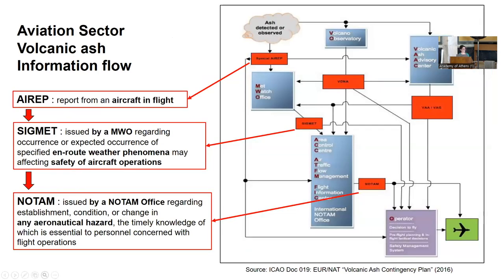This diagram shows the information flow within the aviation sector in case of a volcanic eruption, as prescribed by ICAO in the Volcanic Ash Contingency Plan. Information is exchanged and disseminated between different parties in the form of messages — either in digital gridded format or alphanumeric form. The role of the VACs is obviously crucial in receiving information from various sources regarding volcanic ash and translating it into advisories for the rest of the users.